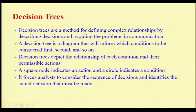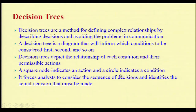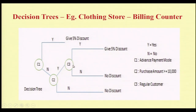Decision trees are a method for defining complex relationships by describing decisions and avoiding problems in communication. A decision tree is a diagram that informs which conditions to be considered first, second, and so on. Decision trees depict the relationship of each condition and their permissible actions. A square node indicates an action and a circle indicates a condition. It forces analysis to consider the sequence of decisions and identifies the actual decisions that must be made.